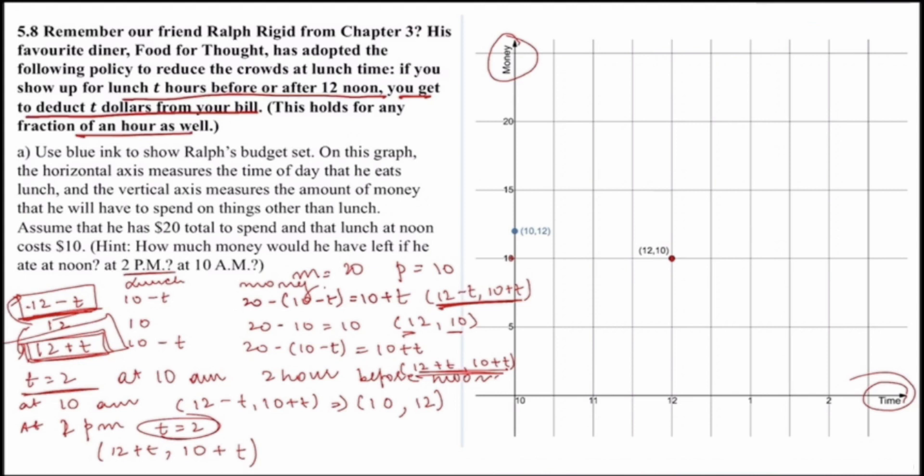Now t is taking a value of 2. That would be 12 plus 2 comma 10 plus 2, or (14, 12), which would lie here. Since 14 is nothing but 12 plus 2, I am calculating at 2 PM. Now if I join all these points, from left side and from right side, this is my desired budget line for Ralph.